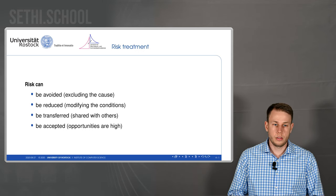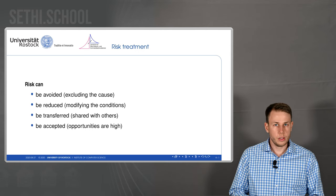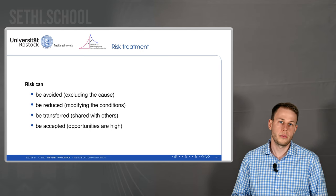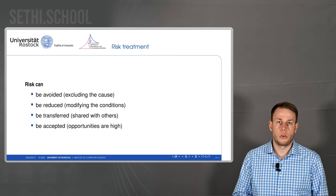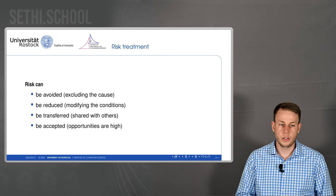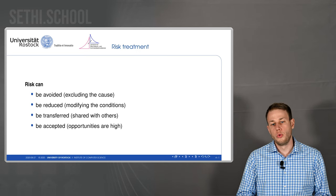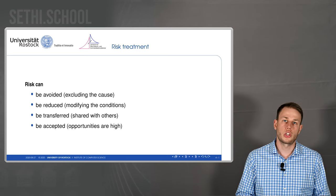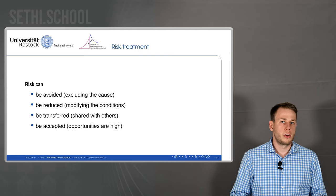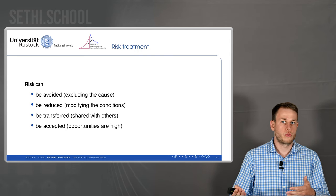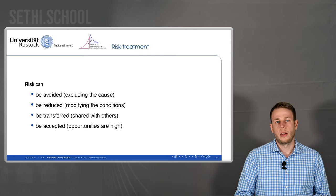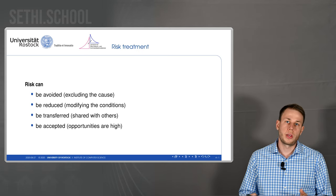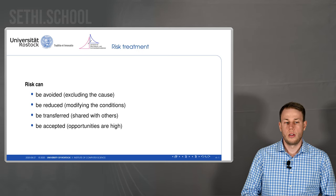For risk treatment, you can do different things. The normal intuitive option is to counteract the risks by implementing new safeguards, but this might not be your best choice. Risks can be avoided — meaning you exclude the cause of the risk. They can be reduced by modifying conditions that are necessary for the risk to appear, lowering the frequency of the risk.